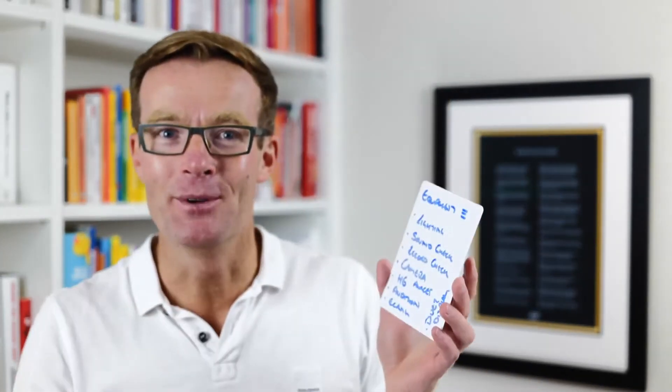Here's my equipment checklist. So we talk about lighting, talk about sound, the recording check, camera, then we've got Audition — even though we're recording through a piece of software, I need to make sure it is recording correctly. Using Ecamm Live, I need to make sure that's recording and saving in the right place. And then I've got Duo Display, which enables me to use my iPad as a second screen from my main computer. All the things in terms of equipment we need to go through as a checklist.